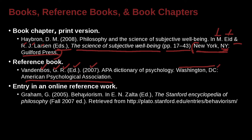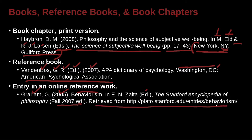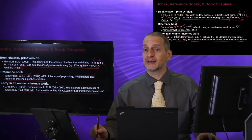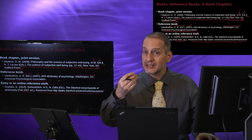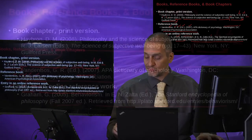How about information that's online but it's some kind of collection? Here we have an example with an actual author: Graham is the author, published in 2005. 'Behaviorism' is the title, and it's inside something edited by E.N. Zolta, editor — that thing is called the Stanford Encyclopedia of Philosophy, which has a date of 2007 where the edition is noted. APA has defined 'Ed.' as edition, and it was retrieved from a specific address. That's an online source someone has written inside another container.